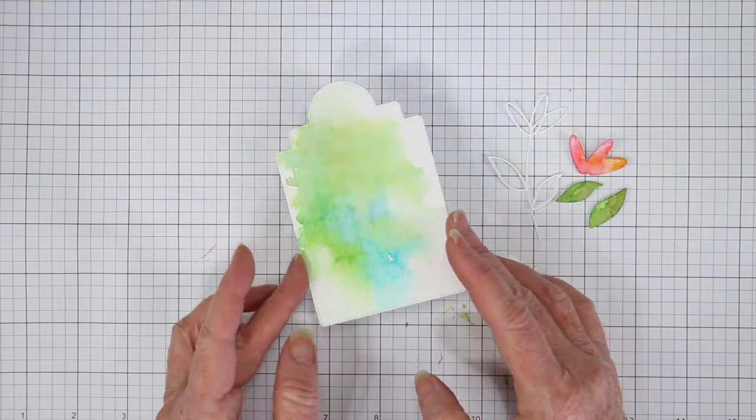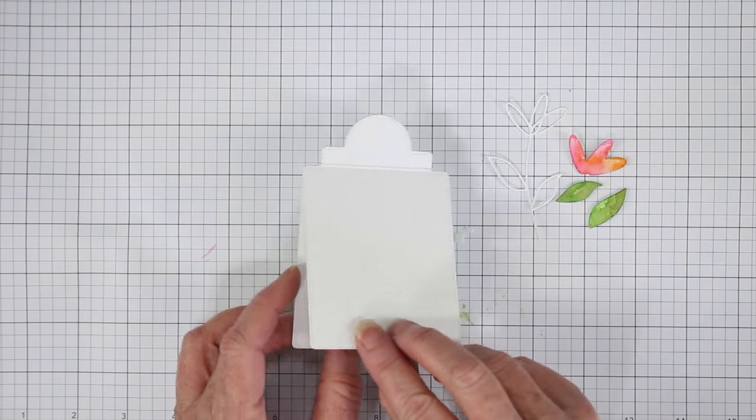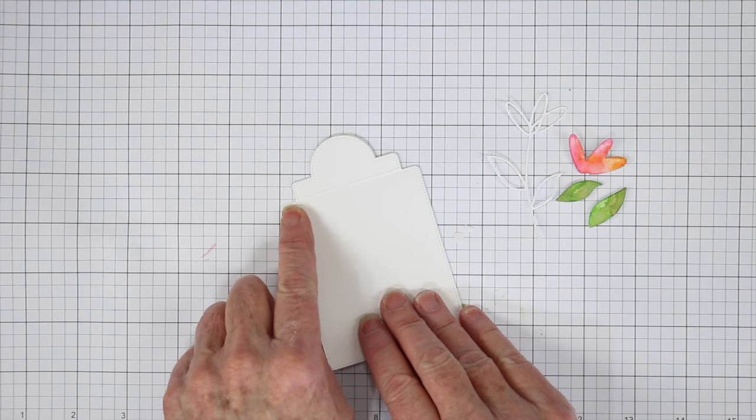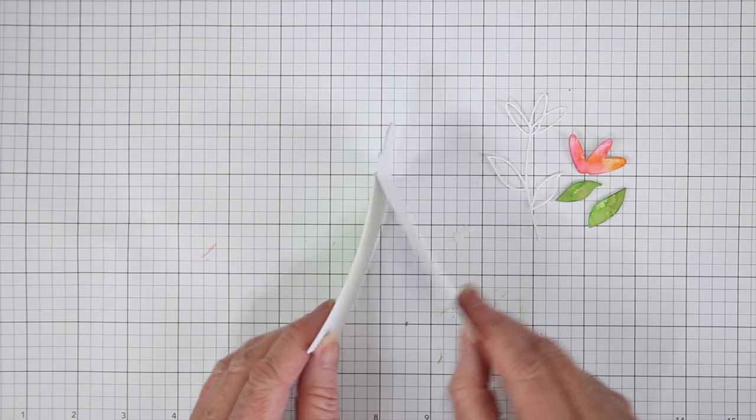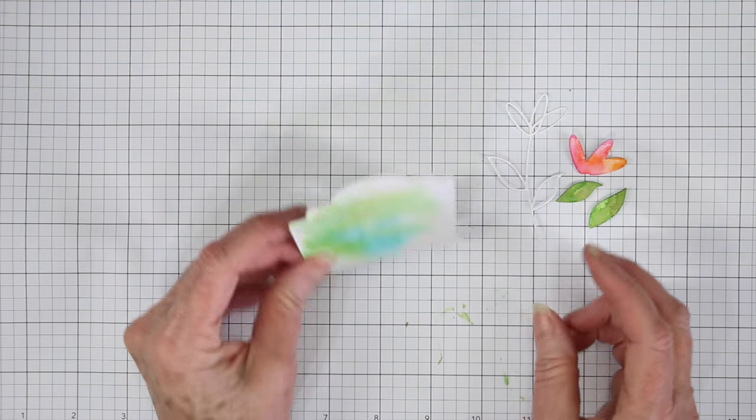So I have cut two of these tags, and I've put them together at the top to make a mini card, and I've used my scoreboard just to score a line at that top part, and then I've used my adhesive to stick that together. So now I have a mini self-standing tag card.